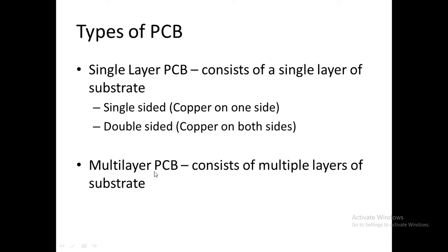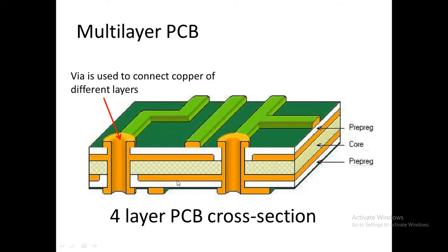The second type is the multilayer PCB which consists of multiple layers of substrate. A typical multilayer PCB is shown in this figure. This is a four-layer PCB — the cross section of a four-layer PCB — in which this is the top layer. These are the tracks on the top layer, and this is the base material. There are multiple layers of the base material or the substrate. This is the first layer of the substrate, on top of which there is the top layer of copper. The green color is of the solder mask.